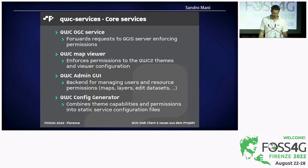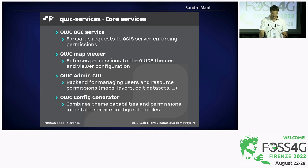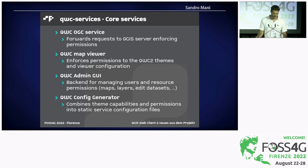The core services in a nutshell: the OGC service is a proxy between QGIS server and the web client that enforces permissions such as permitted layers or permitted attributes. The map viewer serves the actual static QWC application while adjusting configuration based on permissions for the authenticated user. There's the administration GUI for managing permissions and resources. And the config generator reads the entire QGIS projects configured as themes, combines them with permissions from the administration GUI, and generates static JSON files the services need to operate. The big advantage of this config generation is that the expensive task happens once and the result is cached for the services to use.